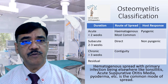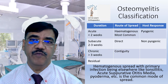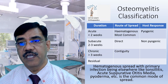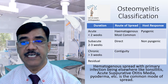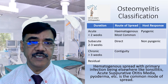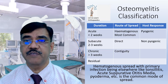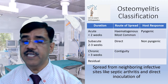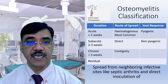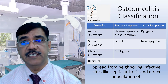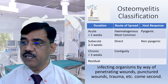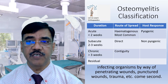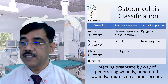Hematogenous spread, with the primary infection being elsewhere — like tonsillitis, acute suppurative otitis media, pyoderma, etc. — is the common mode of spread. Spread from neighboring infective sites like septic arthritis, and direct inoculation of the infecting organisms by way of penetrating wounds, punctured wounds, or trauma, becomes the second mode.